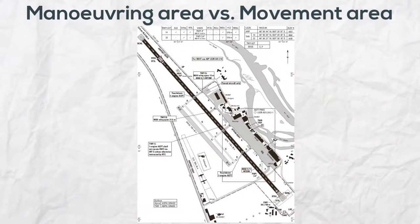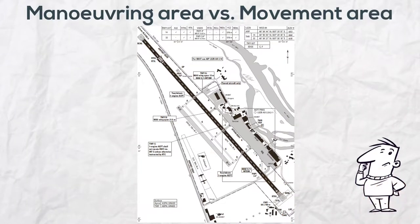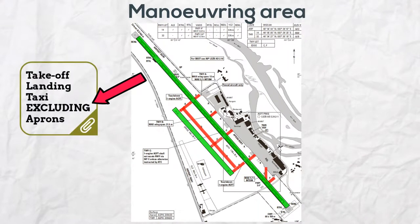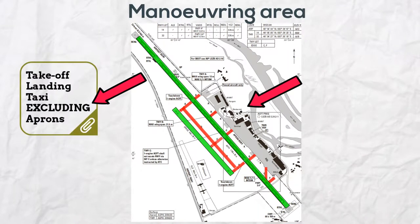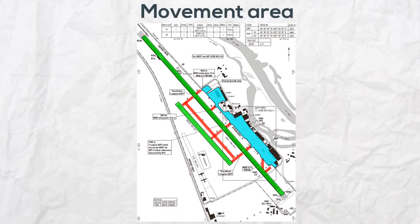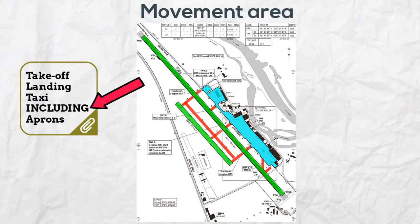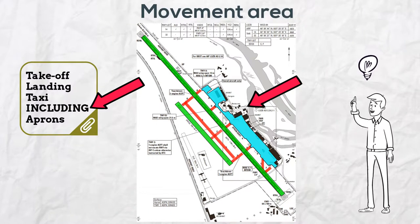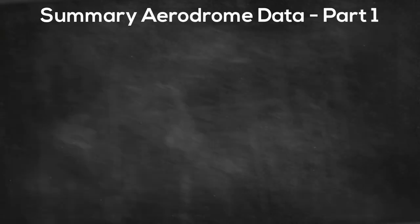To describe an aerodrome surface, the terms maneuvering area and movement area are used. The maneuvering area is that part of an aerodrome to be used for the takeoff, landing, and taxiing of aircraft, excluding the aprons. The movement area is that part of an aerodrome to be used for the takeoff, landing, and taxiing of aircraft, consisting of the maneuvering area and the aprons.